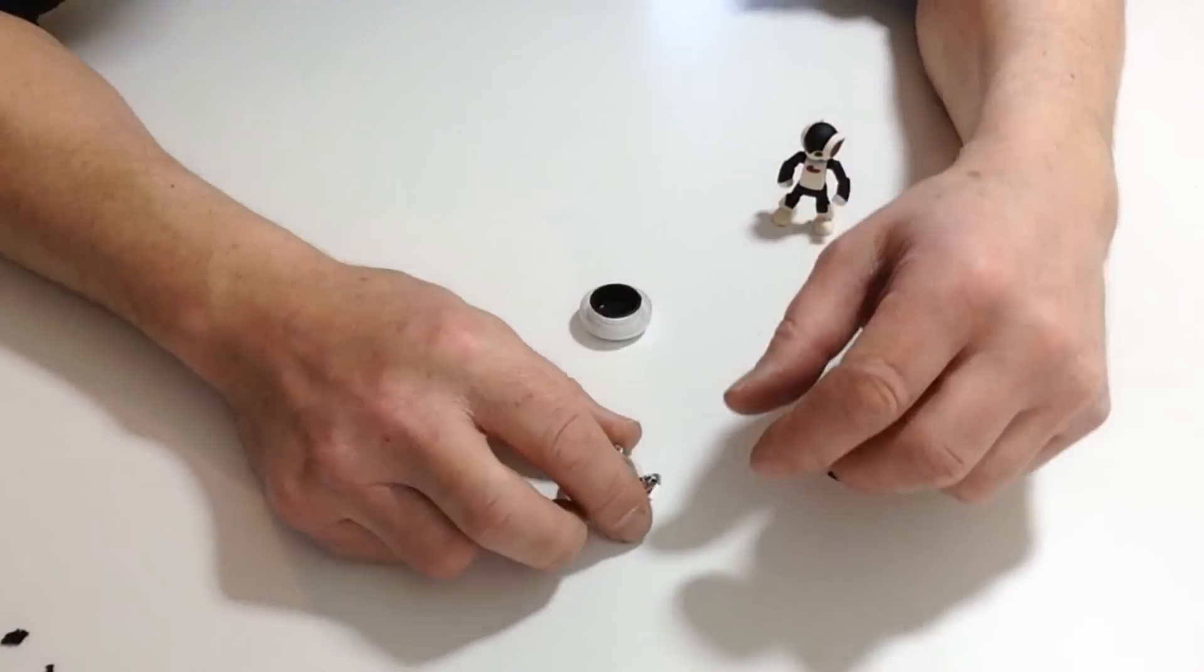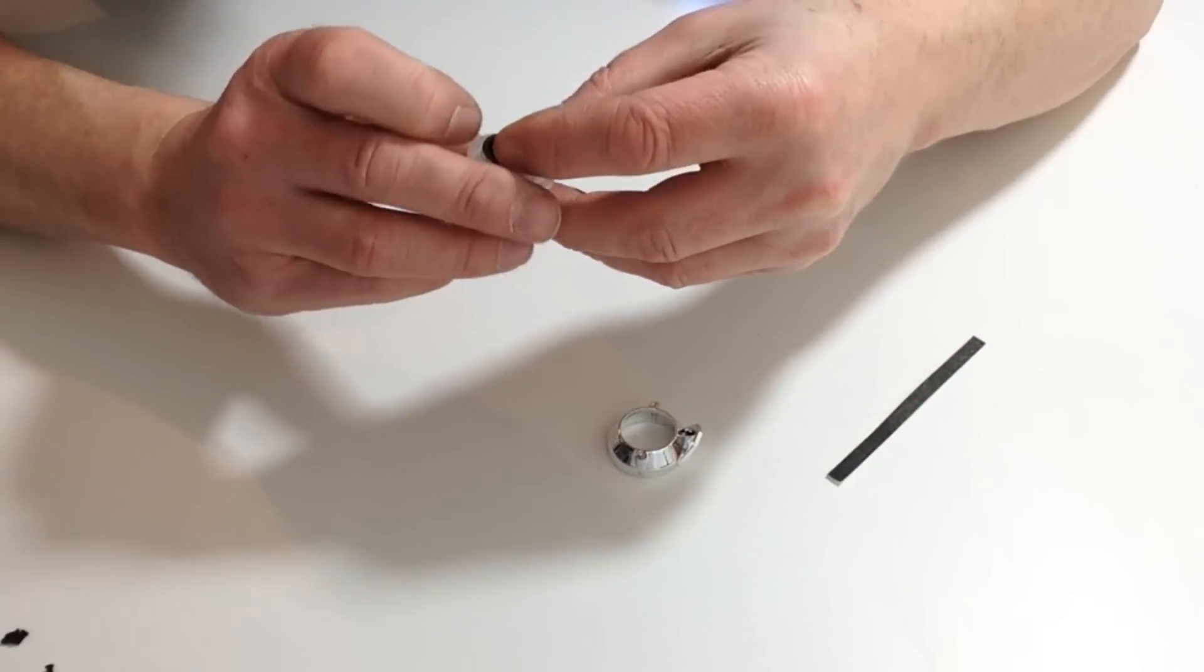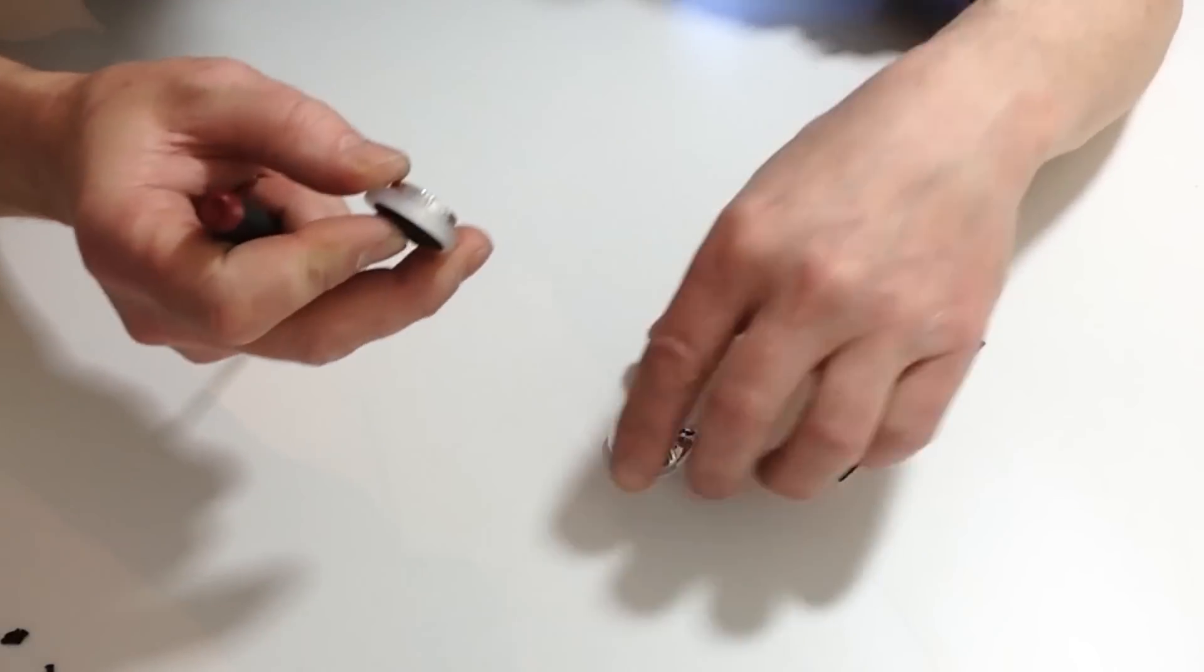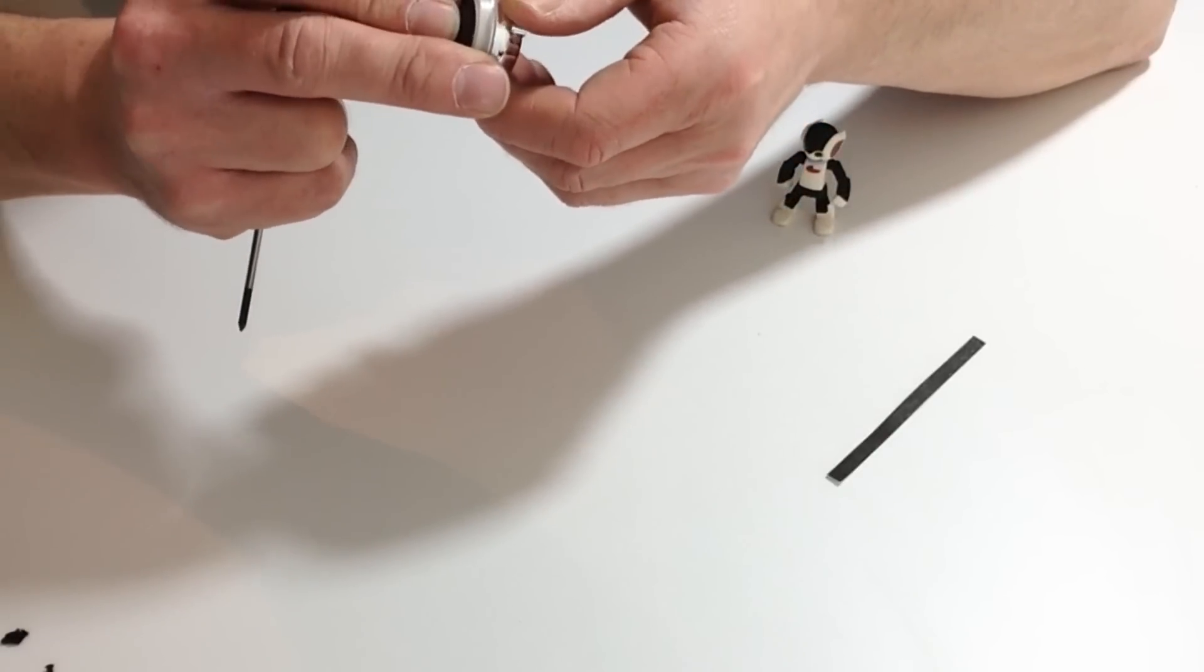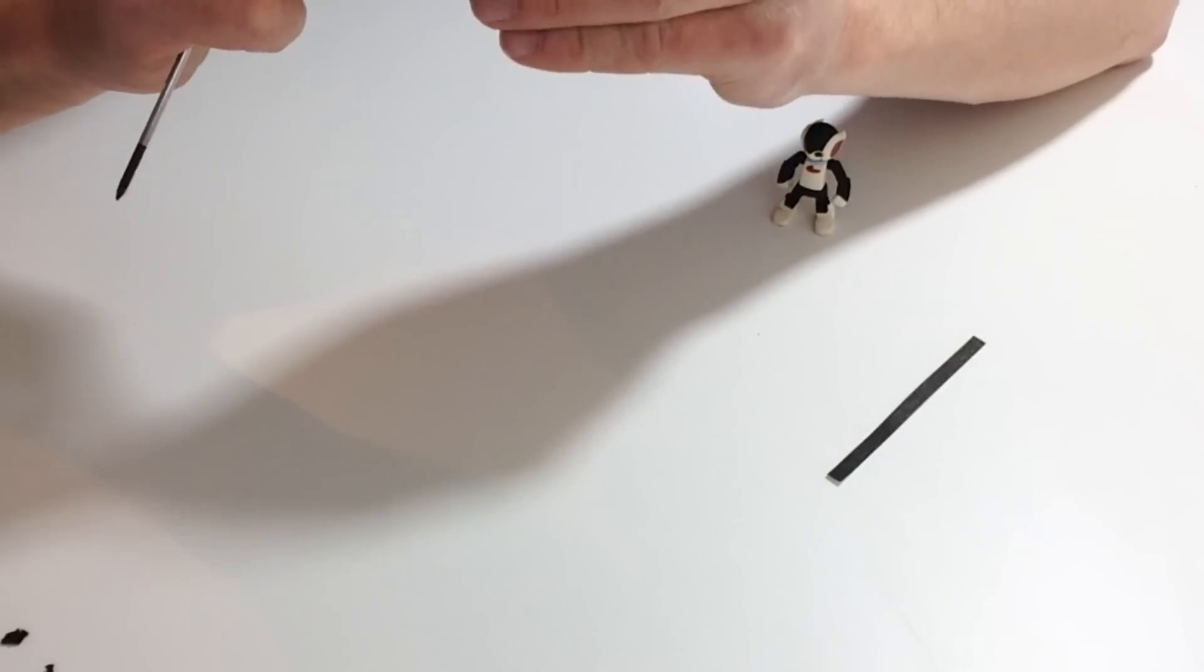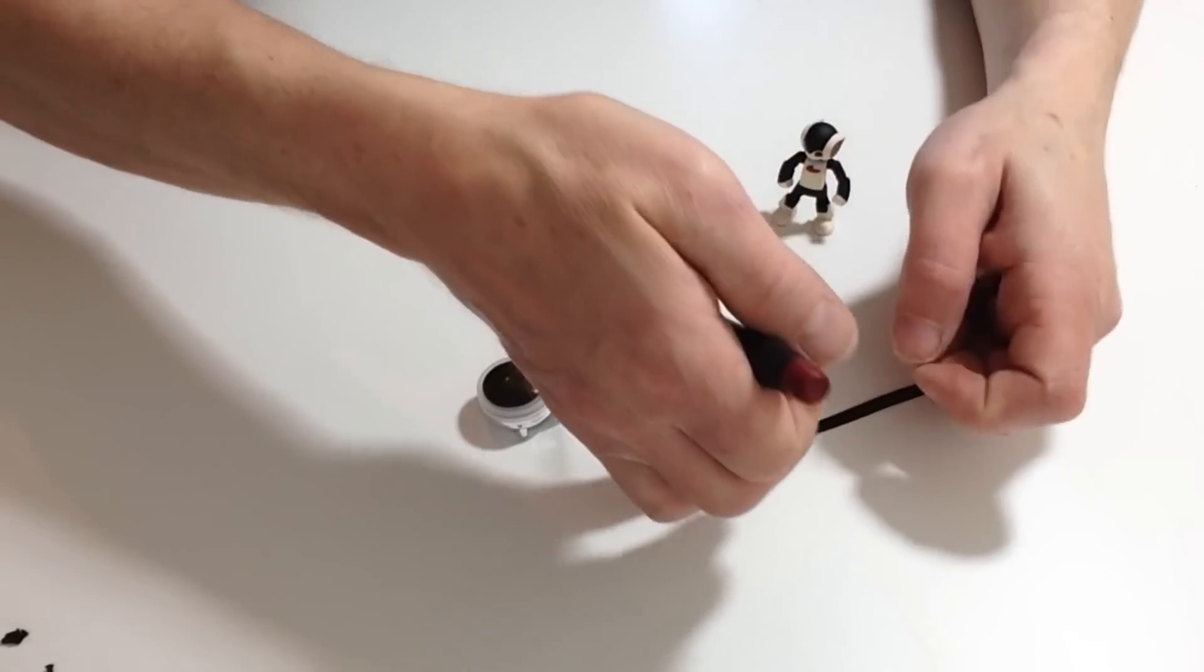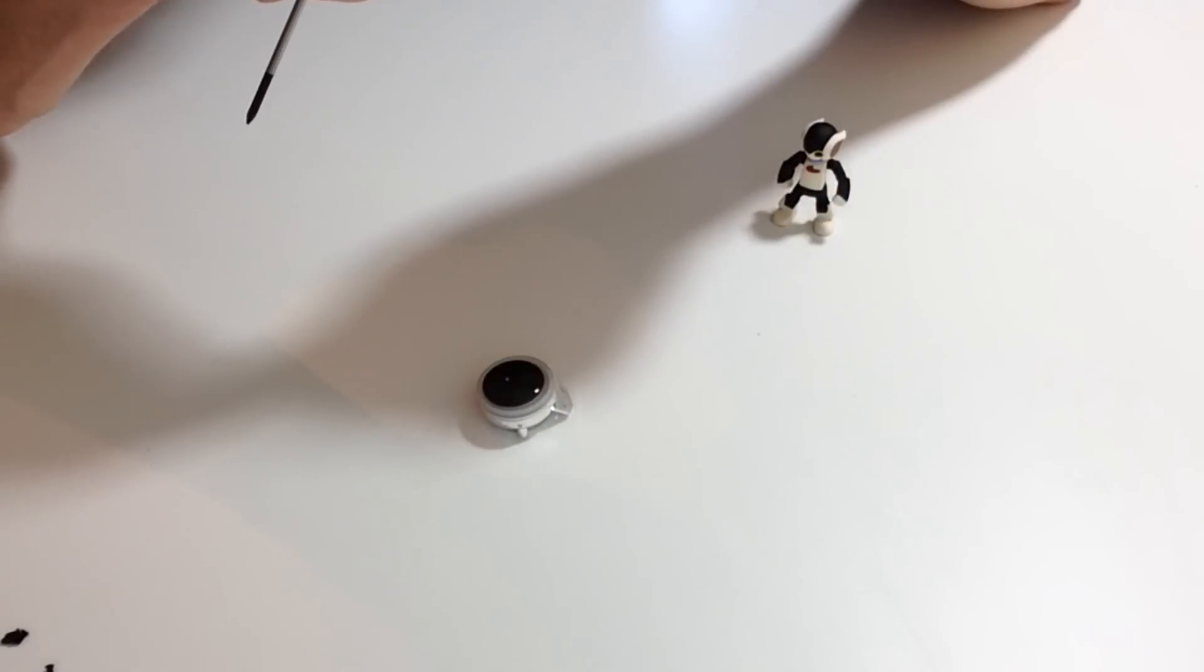Take either of your eye assemblies from issue one and your eye socket. Notice you've got a tiny little notch there. We need to take one of the eye sockets and place that into position so that notch fits nicely in there.